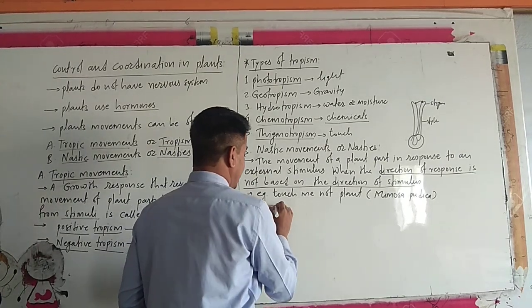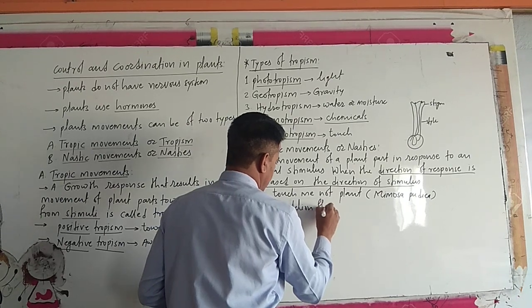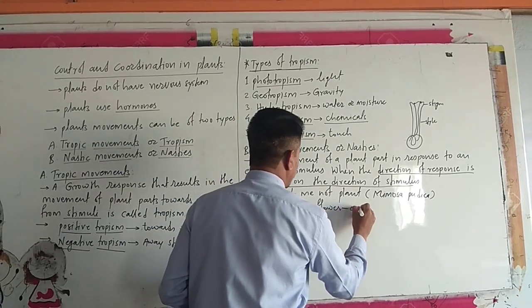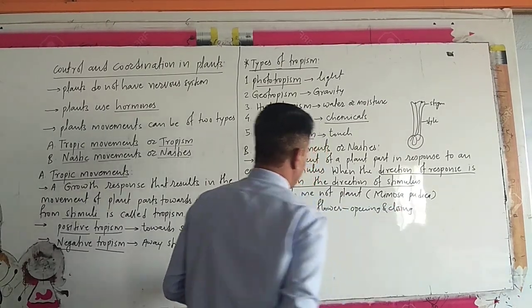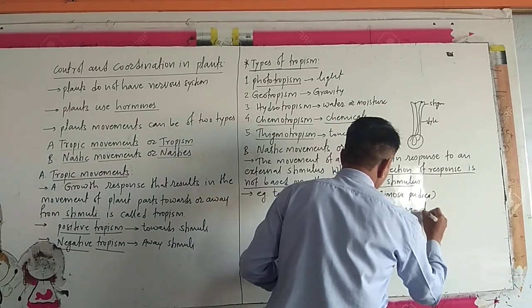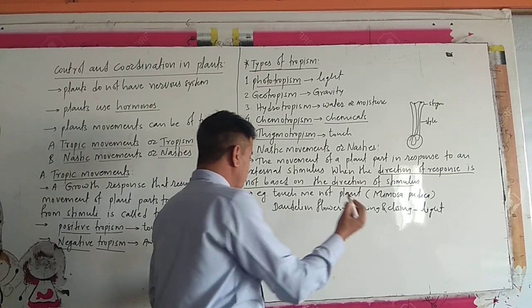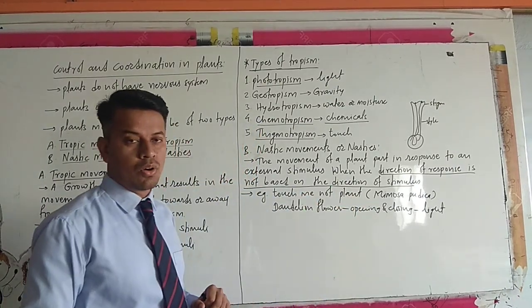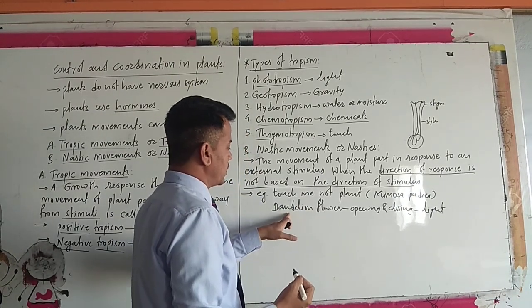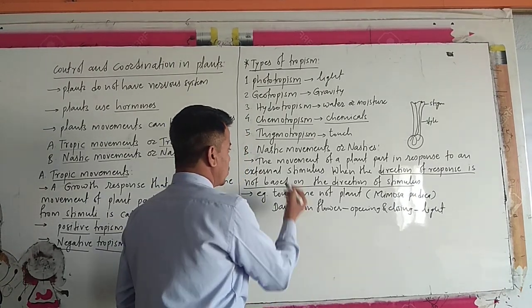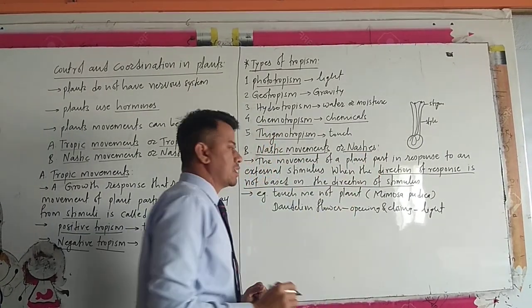Take one more example — the dandelion flower. The opening and closing of the dandelion flower is due to the presence of light, but that opening and closing is not based on the direction of the stimulus. Such movements found in plants or flowers are called nastic movements or nasties.